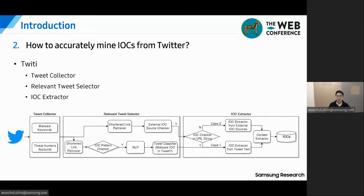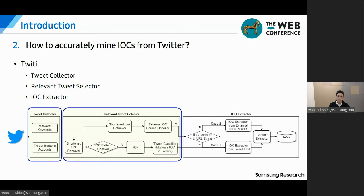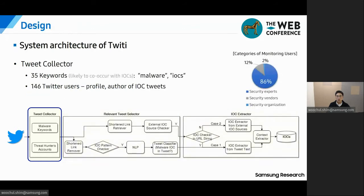To answer the second question, we designed Twitty, a system that automatically extracts various forms of malware IOCs from Twitter. Twitty consists of three parts: the tweet collector, the tweet selector, and the IOC extractor. The first part is the tweet collector. To maximize the number of IOCs collected, Twitty collects data primarily by keyword tracking using the Twitter Search API, and secondly by user tracking using the Timeline API. Examples of keywords are malware, ransomware, spyware, malspam, IOC, and so on. Twitty uses a total of 35 keywords.